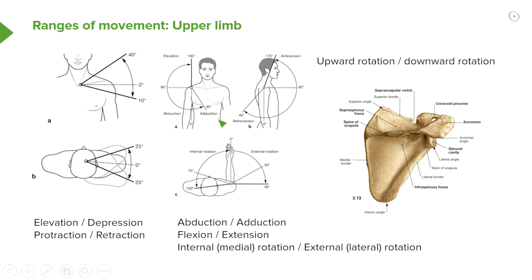We also have what's known as abduction and adduction. Abduction is when the upper limb is moved outwards, in this direction — we have abduction. And then when the upper limb is brought back to the trunk, we have adduction, where the upper limb is then returned to sit alongside the trunk.